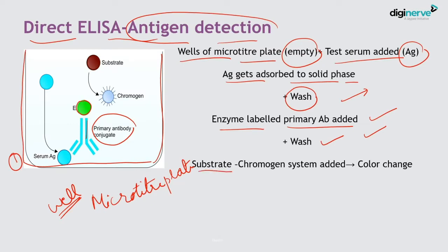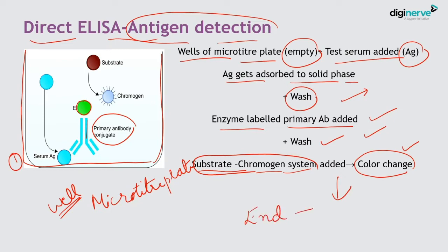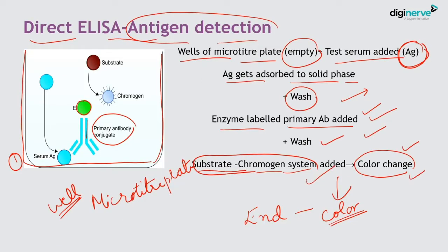In the final step, the substrate chromogen system is added, which leads to development of color. In ELISA the endpoint is development of color — color present means the reaction is positive. Only if antigen was present in the patient serum will it bind to the enzyme-labeled primary antibody forming an antigen-antibody complex, activating the enzyme to act on the substrate chromogen system and produce color. This is the principle and procedure of direct ELISA.